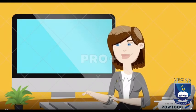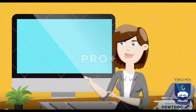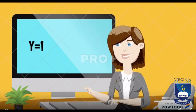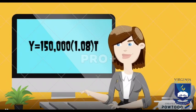After we add all the exponents together, the festival's total attendance can be represented by y equals 150,000 times (1.08) to the power of t.